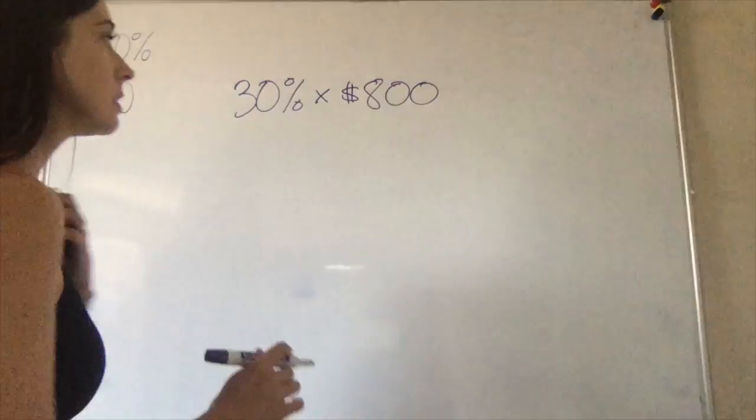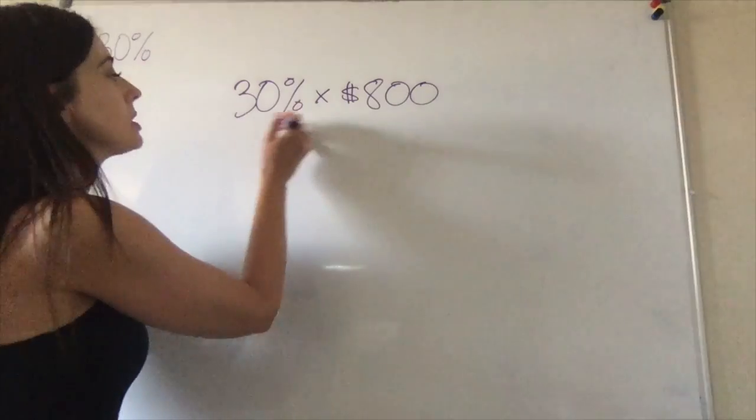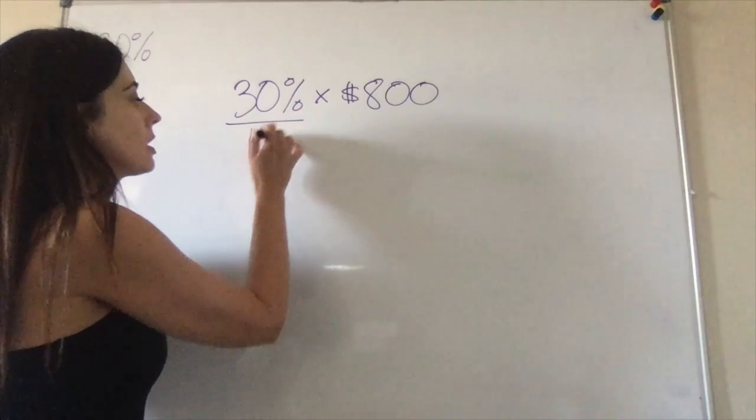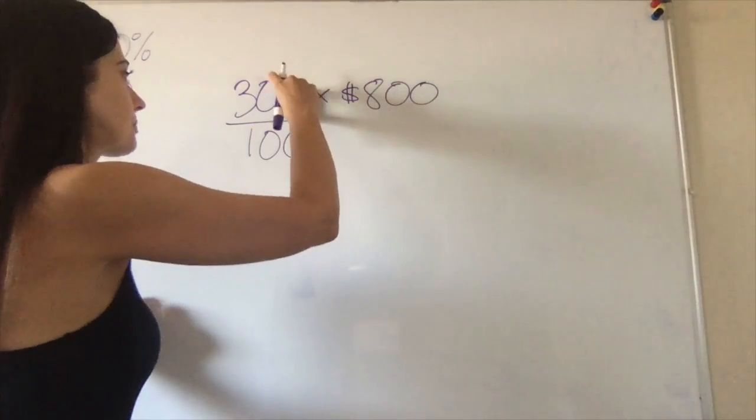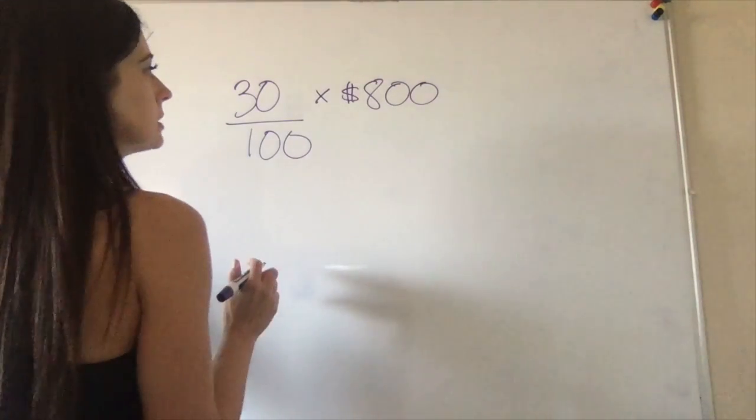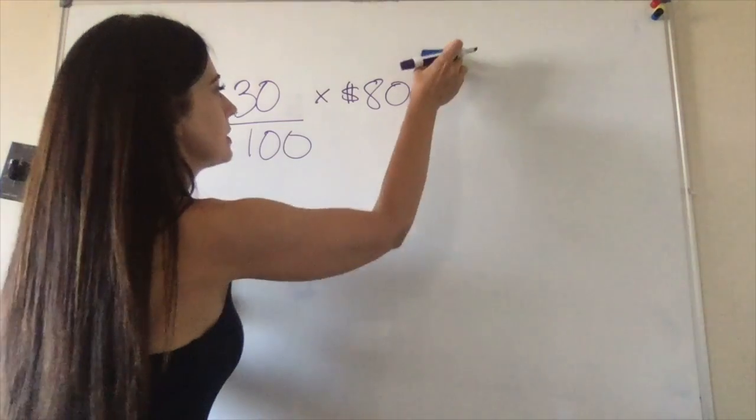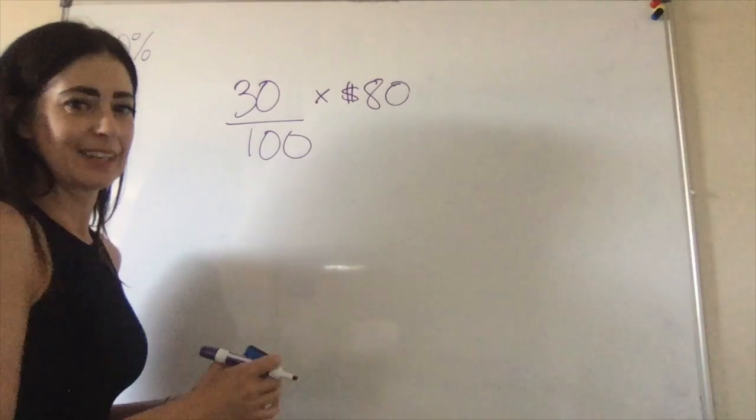Now this one I'm going to do as a fraction. Remember that percent symbol means we need to either turn thirty into a percent—or, sorry, a fraction or decimal. I'm going to do a fraction this time. Percent means out of a hundred, so I'm going to put this number over a hundred and then I can drop my percent symbol.